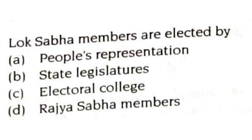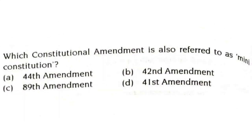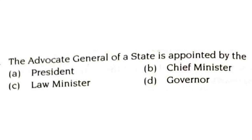Lok Sabha members are elected by people's direct representation — people directly vote for members of Lok Sabha. Which constitutional amendment is referred to as the mini constitution? It is the 42nd amendment. The Advocate General of a state is appointed by the governor, and the Advocate General is the highest law officer of that state.